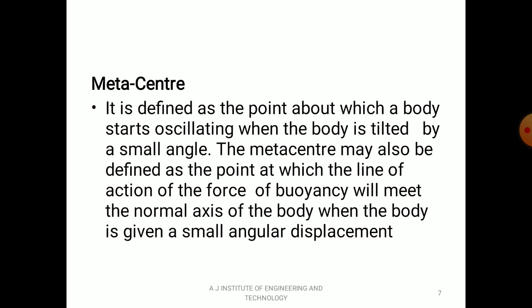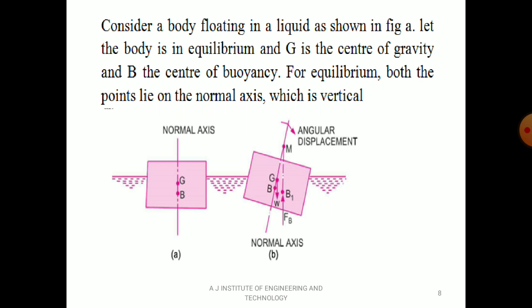Now let's go for metacenter. Before going to the definition, just have a look at the diagram. There is a floating body with a center of gravity G and a center of Buoyancy B. Buoyant force FB acts at point B, and weight acts downward through the centroid. Now give a tilting to the body immersed in liquid. Because of tilting, the point of Buoyancy shifts to point B1, which is the new center of Buoyancy at the tilted position.